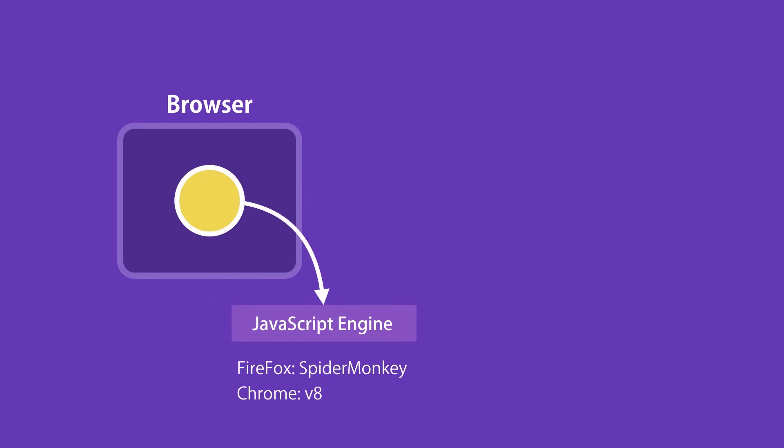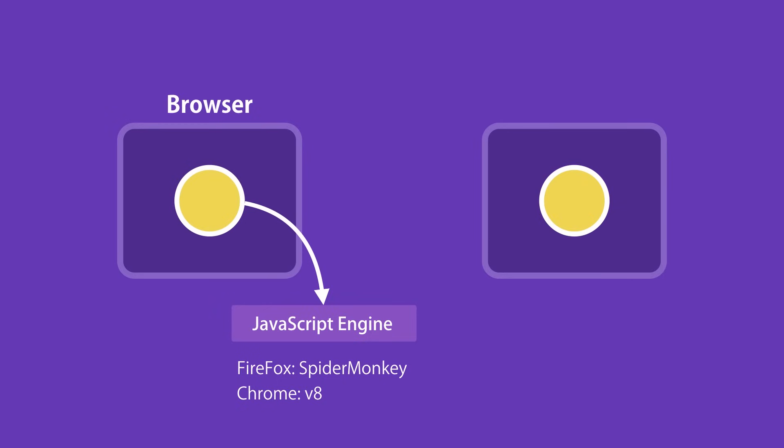In 2009, a very clever engineer called Ryan Dahl took the open-source JavaScript engine in Chrome and embedded it inside a C++ program. He called that program Node. So Node is a C++ program that includes Google's V8 JavaScript engine. Now with this, we can run JavaScript code outside of a browser — we can pass our JavaScript code to Node for execution. This means with JavaScript, we can build the backend for our web and mobile applications.